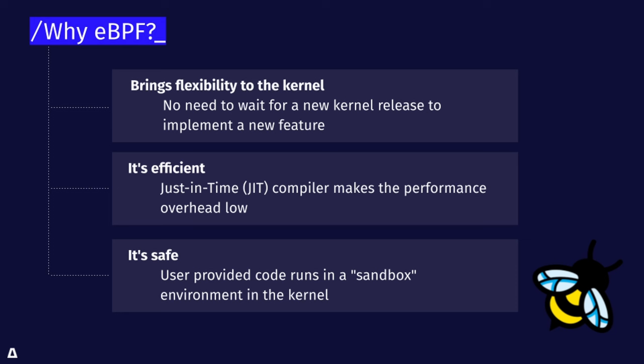As long as there's support for that, the program can run in pretty much any kernel if you have the right permissions. It's really efficient — it runs as a just-in-time compiler, which makes performance overhead very low. But another aspect of performance is that often, to do things previously that you can now do with eBPF, you would have to have a back and forth between the kernel space and the user space, which causes a context switch. Every time you pass data between kernel space and user space, you get a context switch, and that's very costly.